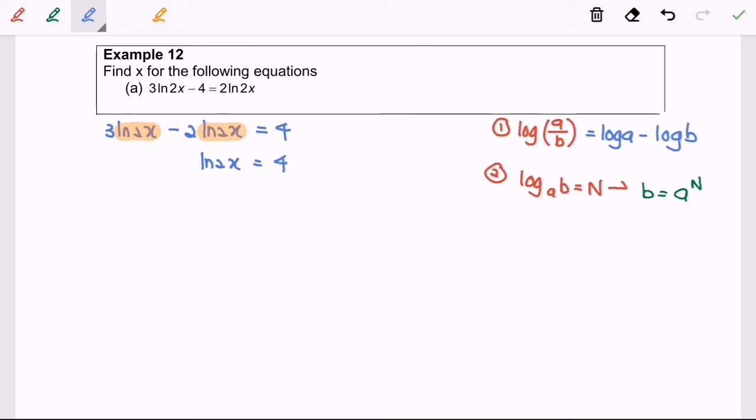Next, I'm going to use the second rule which is from the log form, I'm going to convert to index. As we all know, ln actually is log base e, so we have log base e of 2x equals 4.